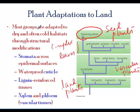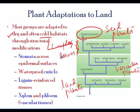Most of these groups are adapted to very dry conditions and often cold environments. For example, this particular group is usually present in colder climates. Some plants were able to survive in certain areas because they had specific modifications that helped them survive in those conditions.